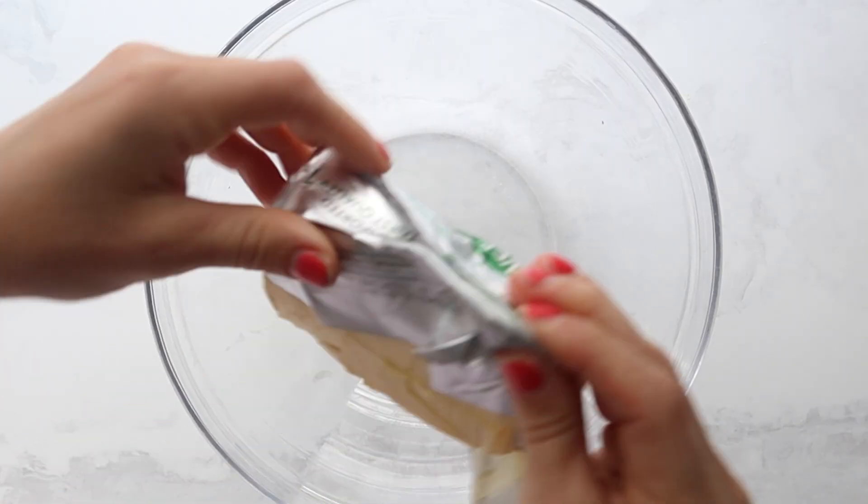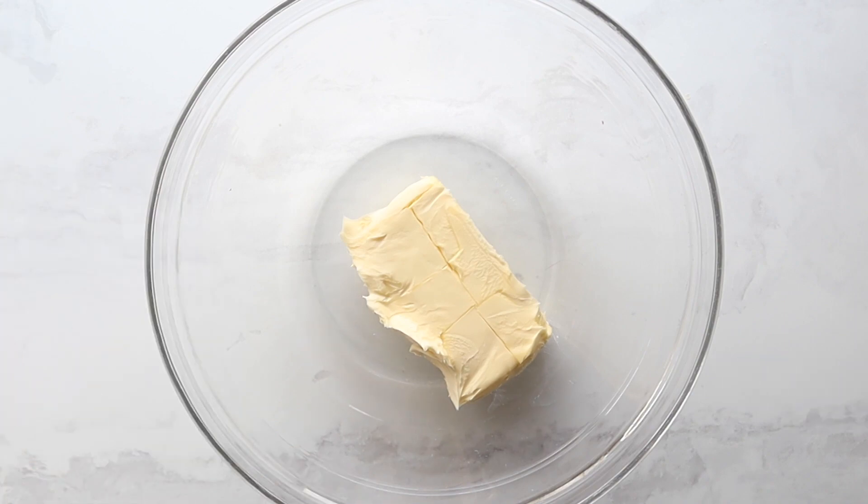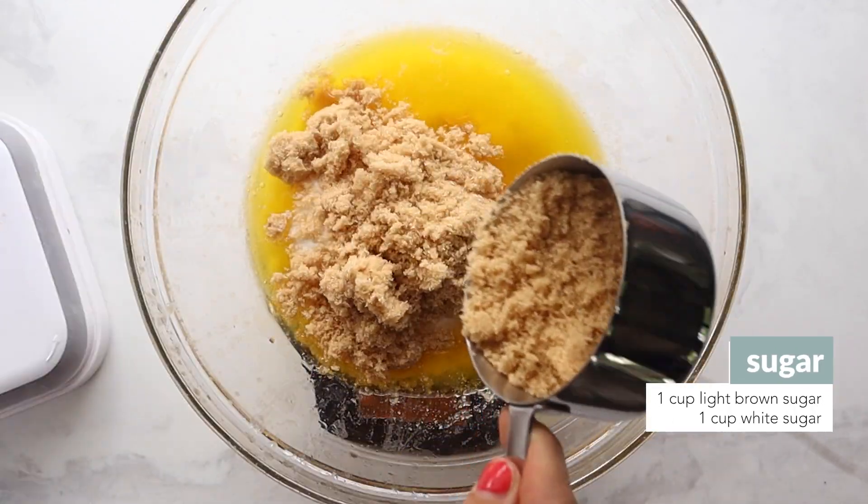First we're going to go through the brownie recipe, which basically is just taking some butter, melting it. Use a larger bowl than you think because you're going to put everything in here.